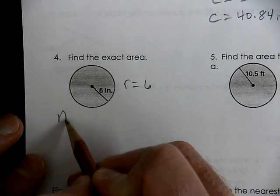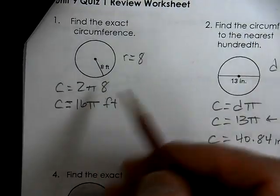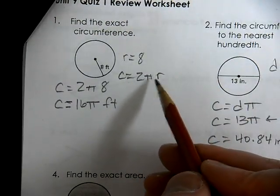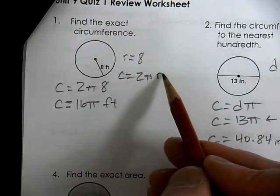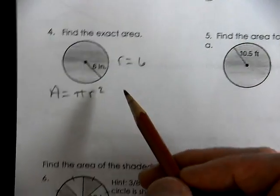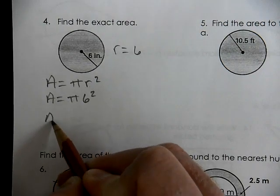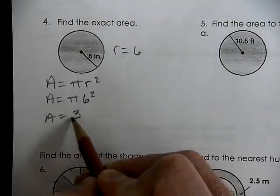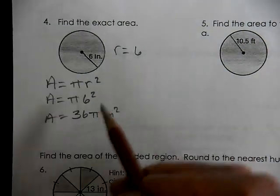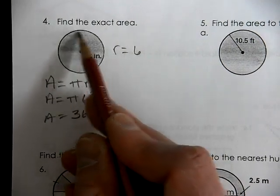Here we're looking for the area; the radius is 6. The formula for area of a circle is πr². Notice it's similar to the circumference formula 2πr — both have π and r. The area formula uses radius squared times π. The exact area is 6 × 6 = 36π inches squared — that represents the number of little squares in the whole area.